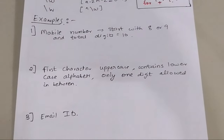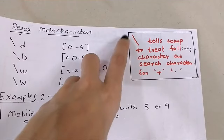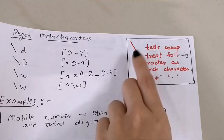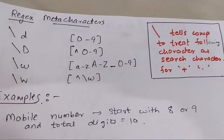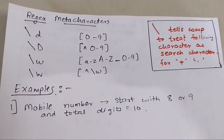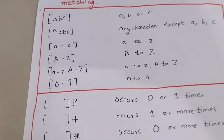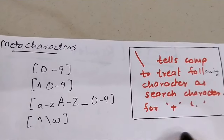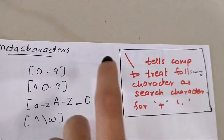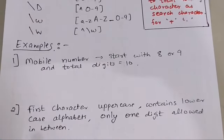Let me explain what the backslash means as an escape character. The backslash tells the computer to treat the following character as a literal search character. For example, if you want to search for a plus sign, a dot, or a hyphen literally in your regex expression, you cannot write them directly because they each have special meaning. So you write a backslash before them — this is the escape character.